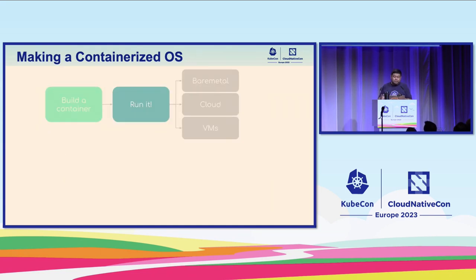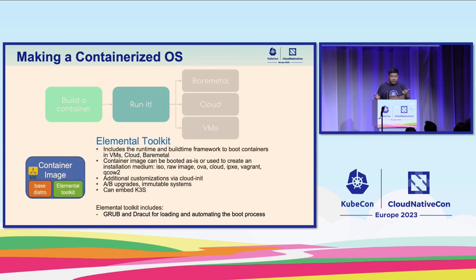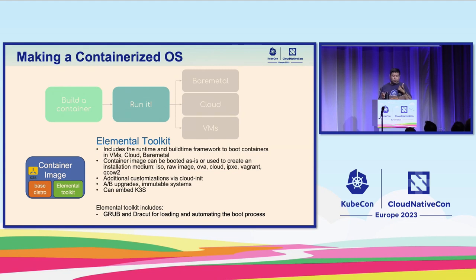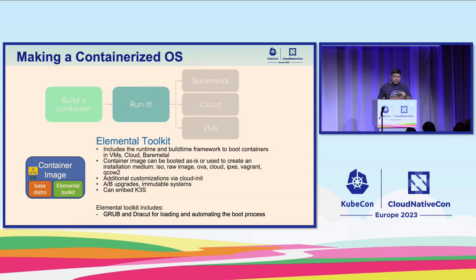The Elemental Toolkit is part of the Elemental software stack, which enables centralized cloud-native OS management with Kubernetes. For this talk, we're strictly staying at the Elemental Toolkit level. We're going to create a bootable OS container image, run it on bare metal, cloud, and virtual machines. The great thing with the Elemental Toolkit is that we can embed K3S as well. It can be used to create ISOs, raw images, OVAs for vSphere, cloud images with Packer, IPXE, Vagrant, and QCOW2.